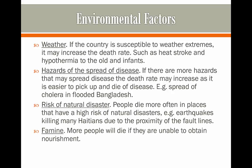The final environmental example is famine — more people die if they're unable to obtain nourishment. This links into weather: if conditions aren't right to grow crops, there will be a famine and people will die. So all these environmental factors can decrease the population.